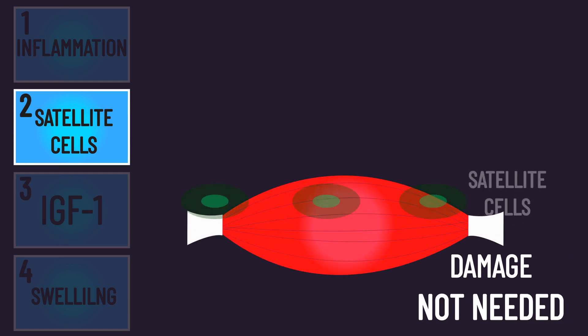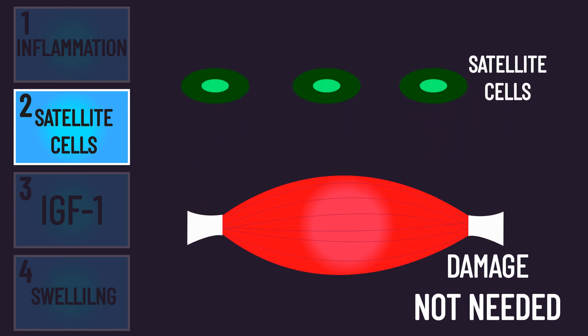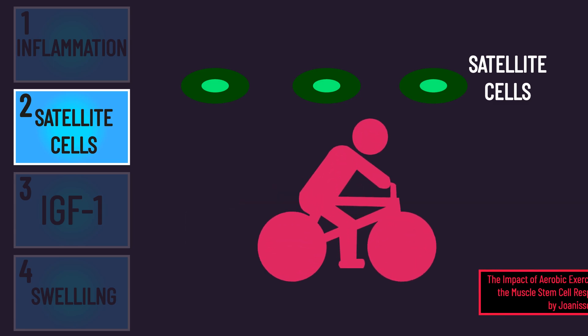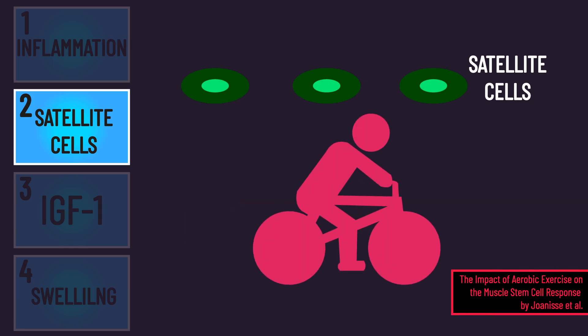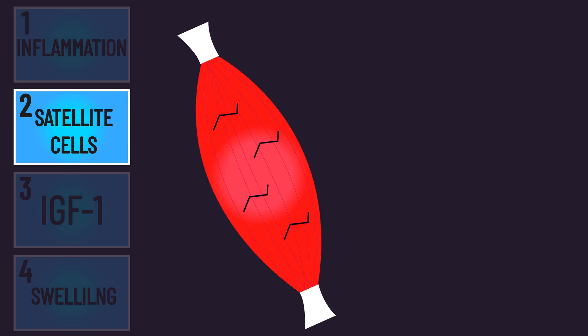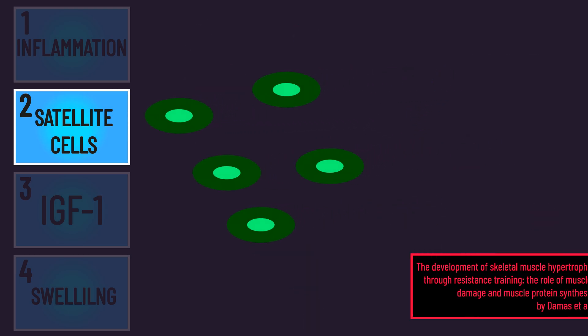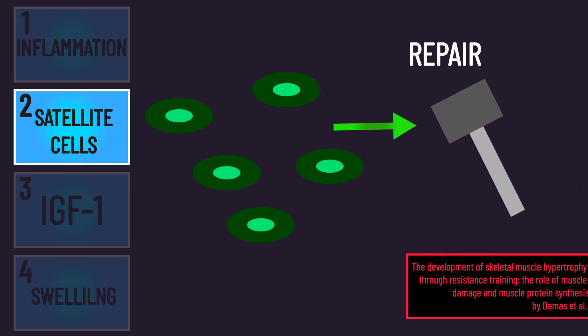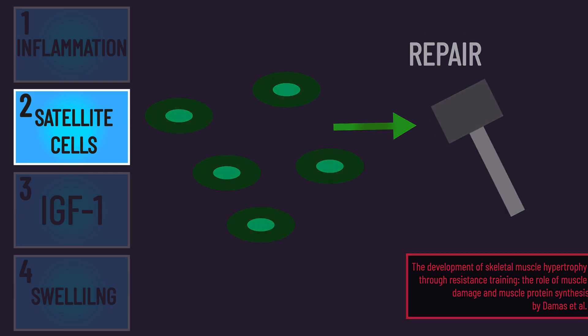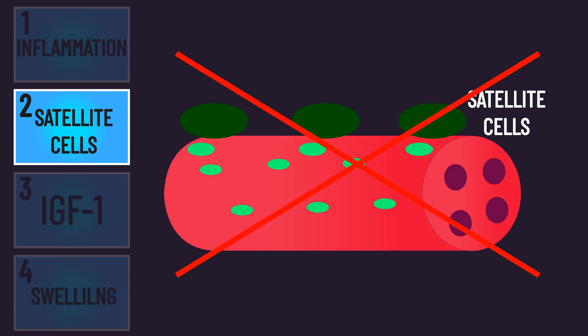With satellite cells, training that does not produce muscle damage can still cause significant satellite cell activation. In fact, aerobic training can activate satellite cells. In data indicating muscle damage may potentiate satellite cell activation, this may potentially be related to repairing the muscle fiber and connective tissue damage, not increasing the number of myonuclei in fibers.